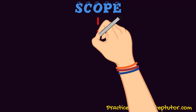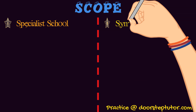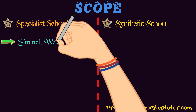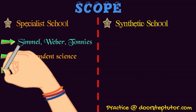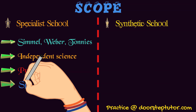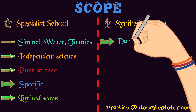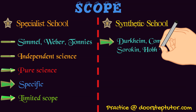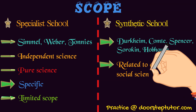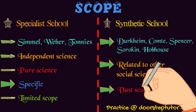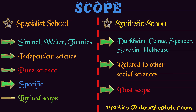Coming to the scope, there are two types of schools we can study. One is the specialist school and the second is the synthetic school. The proponents of the specialist school — Simmel, Weber, and Tonnies — consider sociology as an independent, pure science with limited and specific scope. On the other hand, the synthetic school — proponents of which are Durkheim, Comte, Spencer, Sorokin, and Hobhouse — say that sociology and social sciences are related to each other. Because it is interdisciplinary, there is a vast scope and not a limited scope.